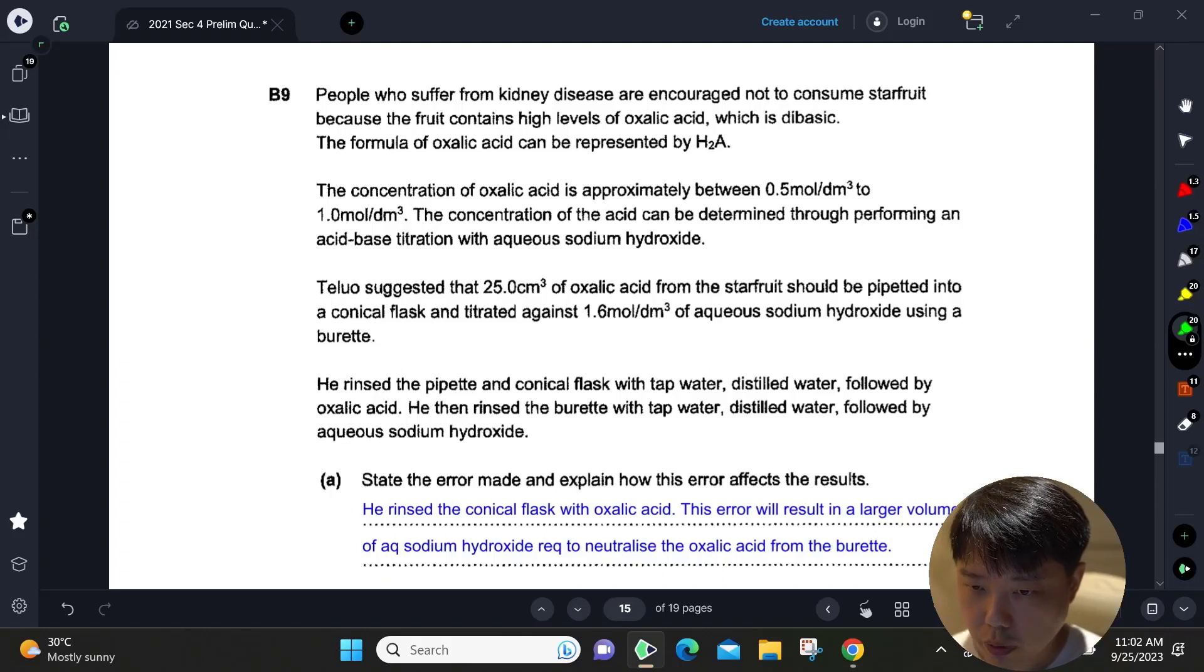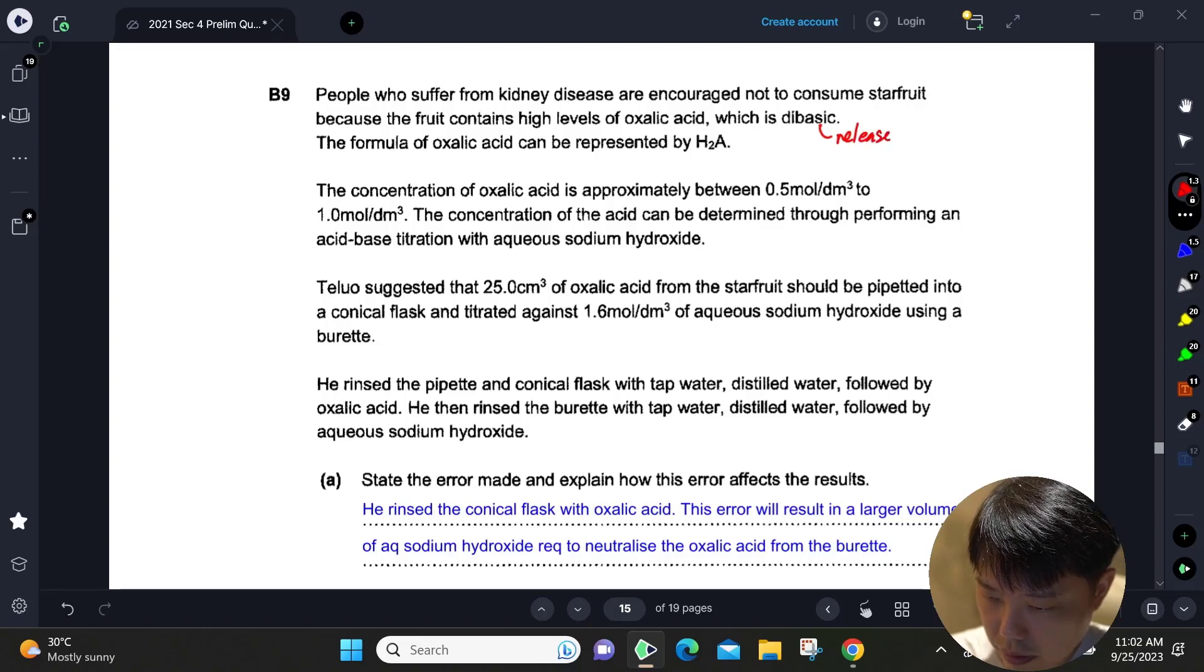Alright, let's move on to Question 9. This question is about people who suffer from kidney disease being encouraged not to consume star fruit because it contains high levels of oxalic acid, which is dibasic. Dibasic means that it releases 2H+ per mole of acid. Most likely it has two COOH groups.